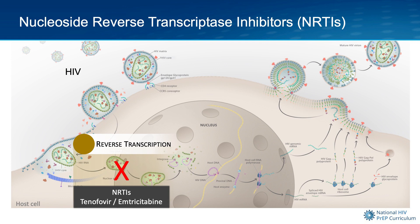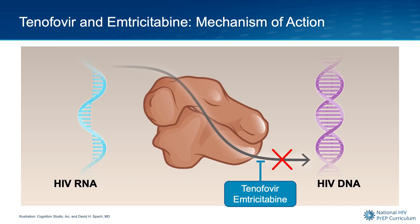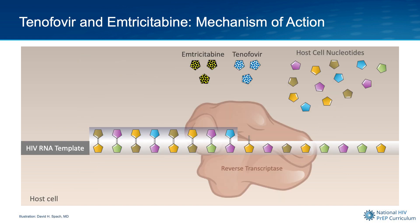Now let's look at how tenofovir and emtricitabine block HIV reverse transcription. From a conceptual standpoint, the basic mechanism of action for tenofovir and emtricitabine is to block the conversion of HIV RNA into HIV DNA. Tenofovir and emtricitabine mimic the host cell nucleotides, but these drugs lack a key structural element that is needed for the binding of more host cell nucleotides.